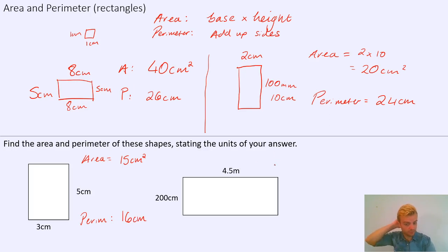And then for this one, this is another one that's got the same problem as the second example we talked about above, because we have a mixture of centimeters and meters. Now I'm going to convert the centimeters into meters to make it 2 meters, because there's 100 centimeters in 1 meter, so there's 200 centimeters in 2 meters.